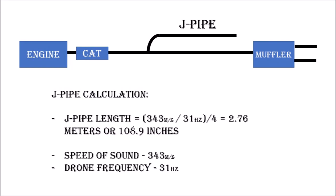My original video used 343 meters per second as the basis for the speed of sound calculation, and I used that when I calculated the size of my J pipe on my 2002 F-150. The problem is that temperature is based at 68 degrees Fahrenheit, and that is nowhere near the actual temperature of your exhaust system.